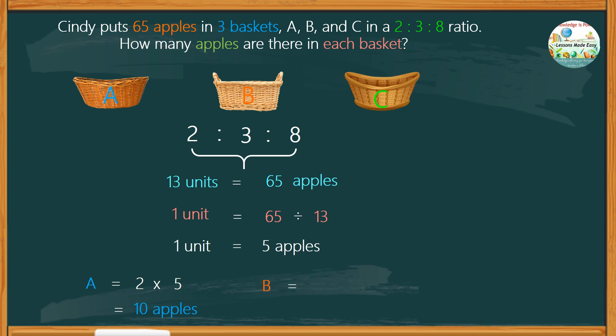Basket B has 3 units of 5, which is equal to 15 apples. And basket C has 8 units multiplied by 5, which is equal to 40 apples.